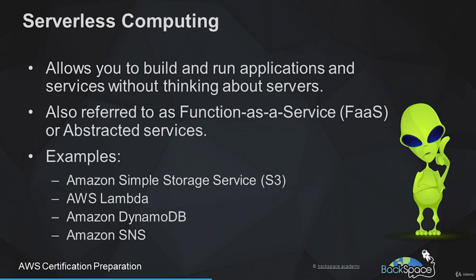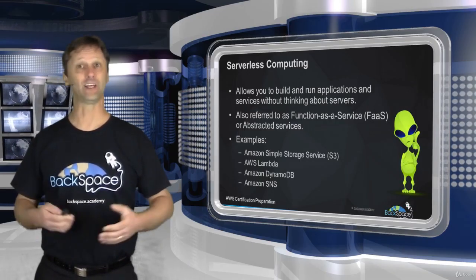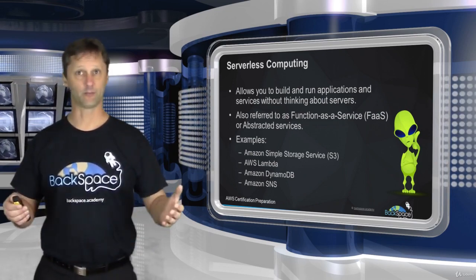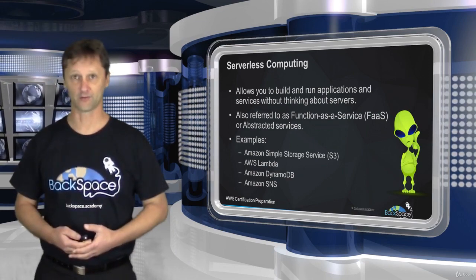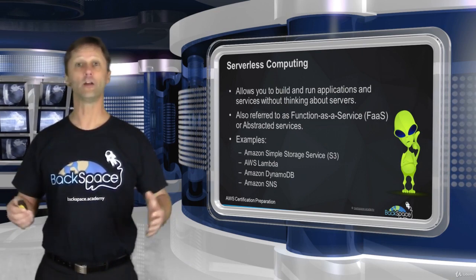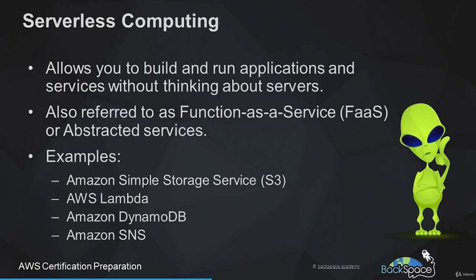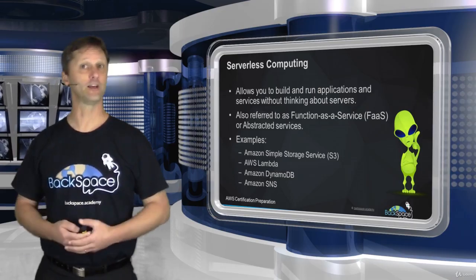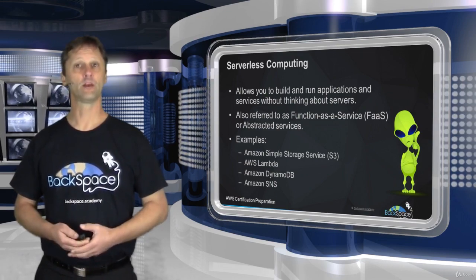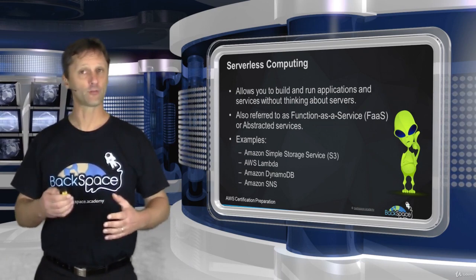Examples of serverless services include Amazon Simple Storage Service, where we create a bucket and put objects and files into it without worrying about the underlying OS or file server — AWS handles all of that. AWS Lambda lets you run code in the cloud without servers — you just provide AWS your code and they look after everything. DynamoDB is a NoSQL database in the cloud as a service, and Amazon Simple Notification Service can send out notifications to your users.